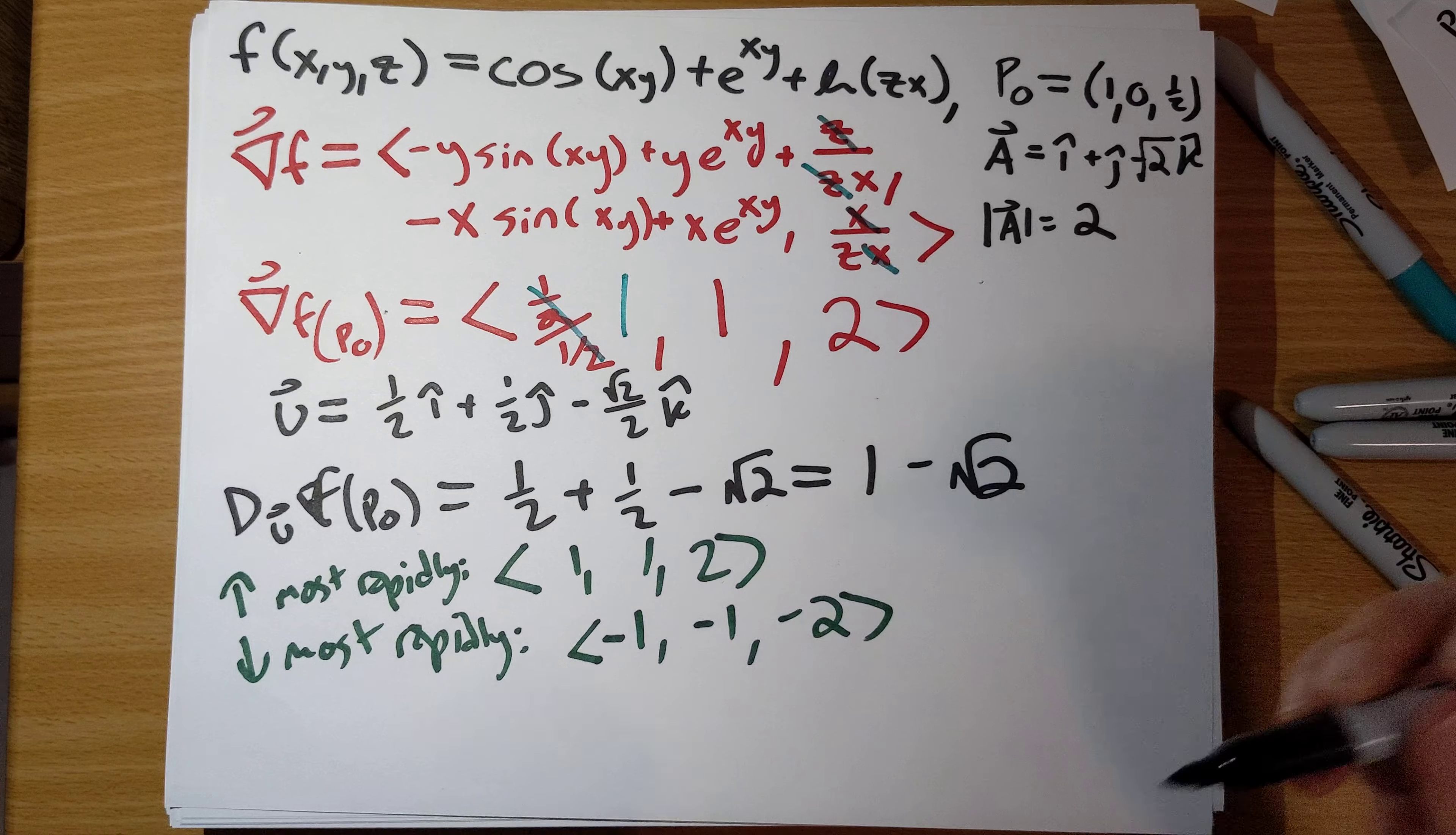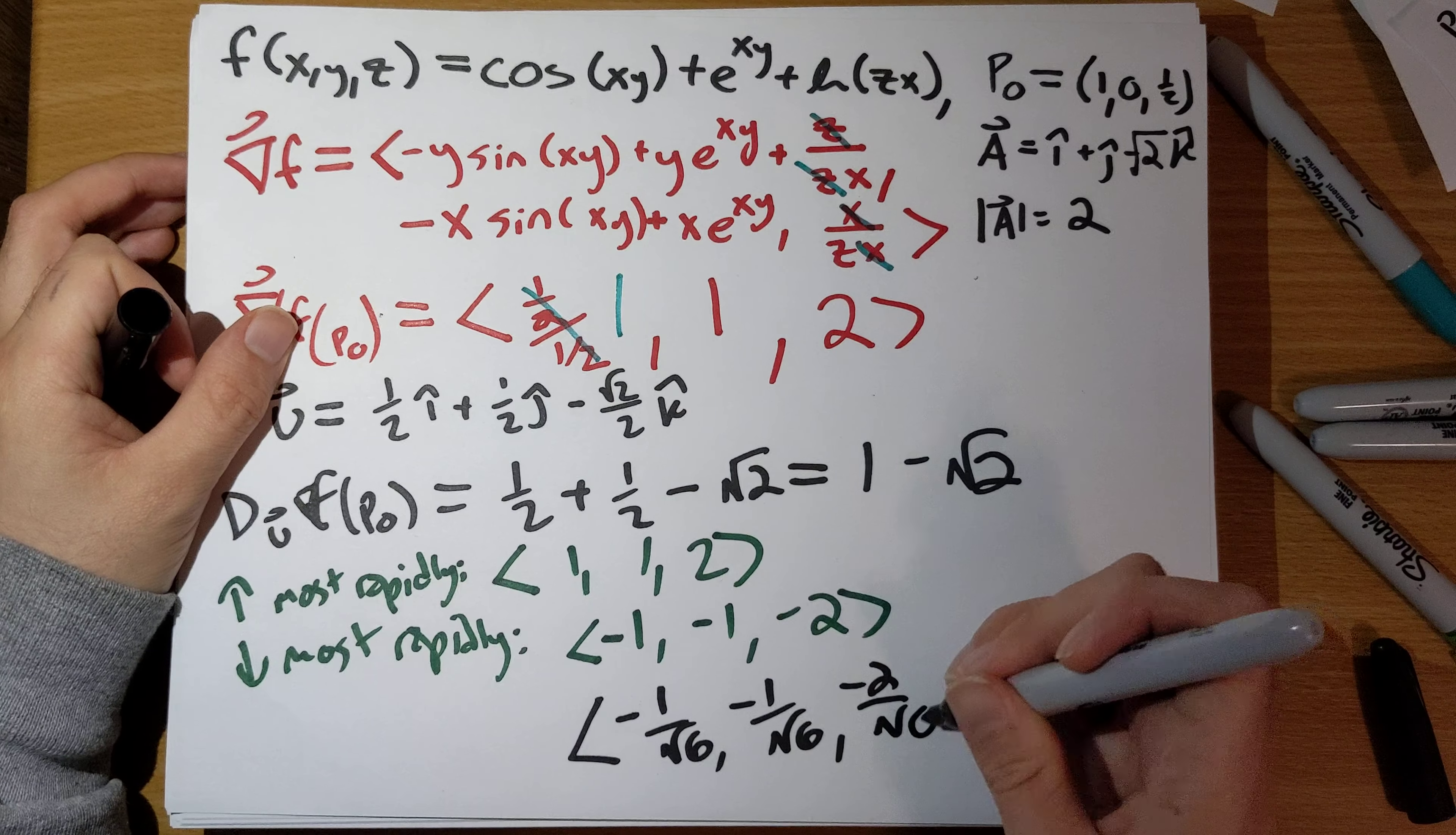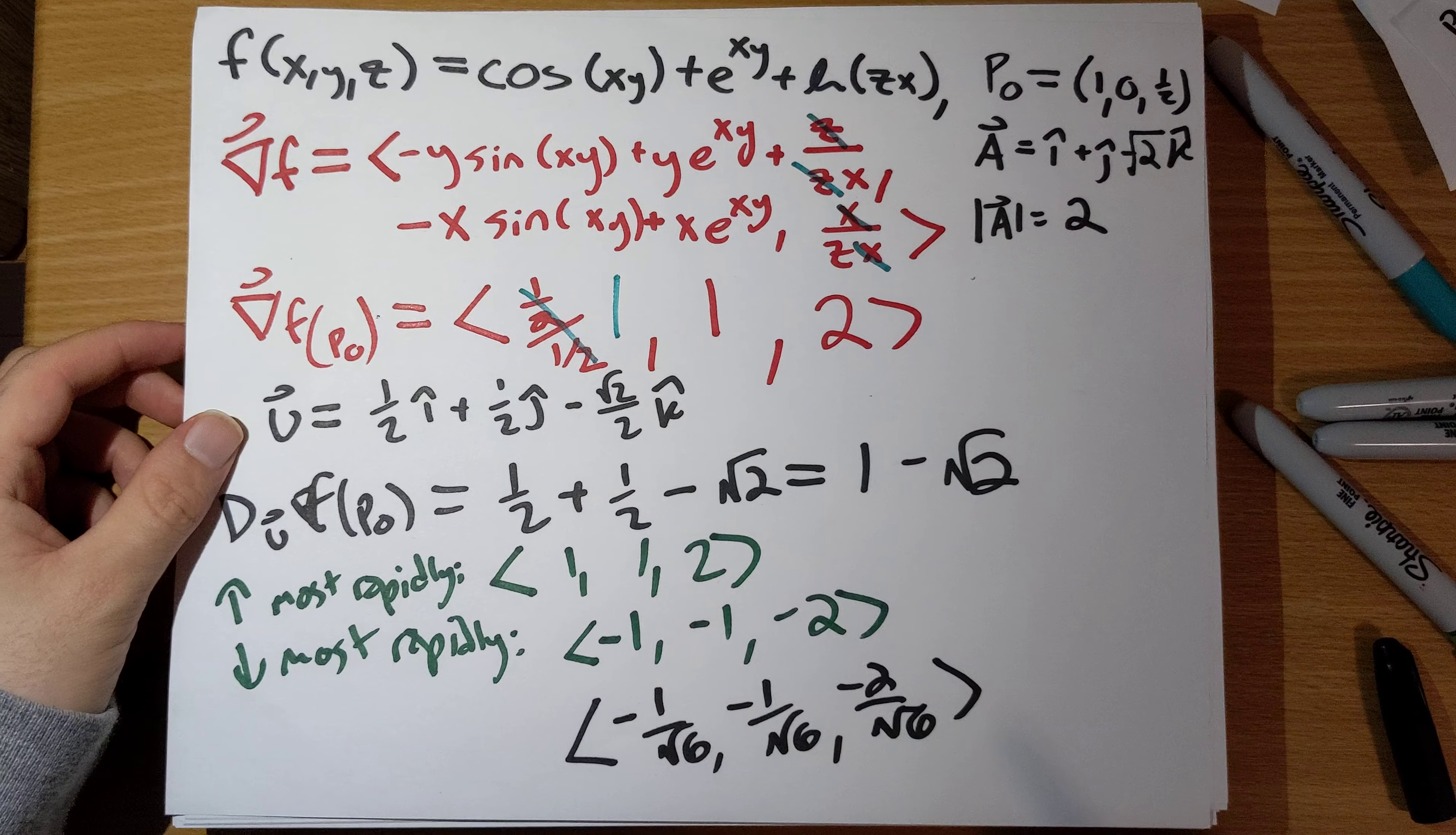I didn't ask you to turn this into a unit vector, maybe I should have. The magnitude of this would be square root 6, so perhaps a more precise answer if we want to make a unit vector is this.